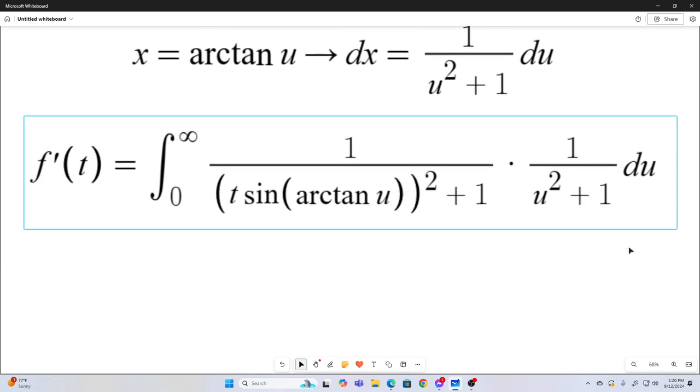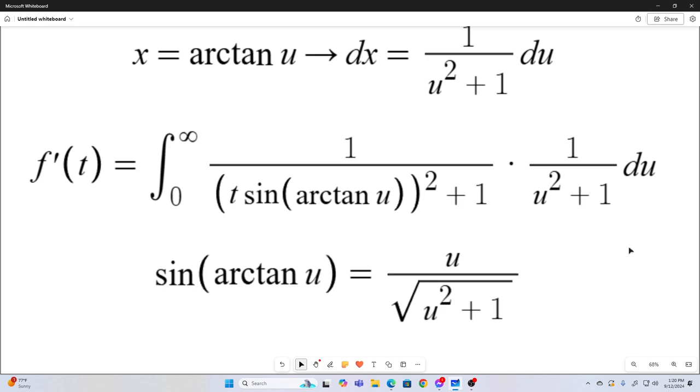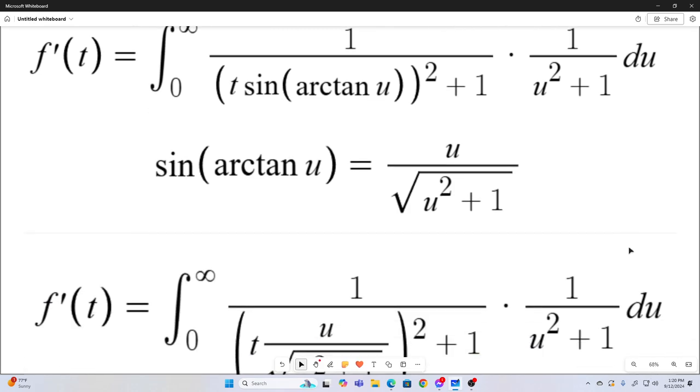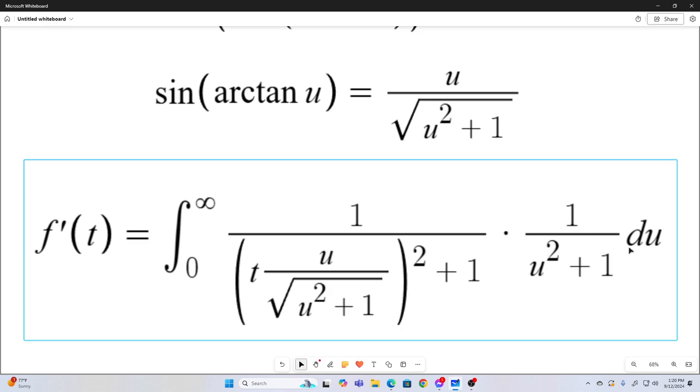Well, now let's remember from trigonometry that the sine of arc tangent u is equal to u over square root of u squared plus 1. So we'll rewrite our f prime of t using that. So we have f prime of t is equal to this junk.